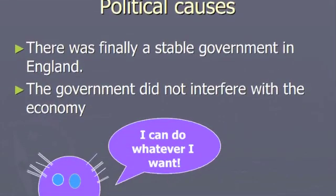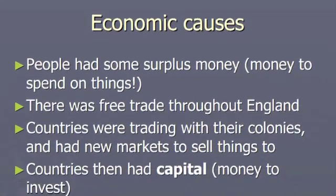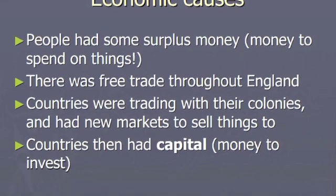Now we have some political causes. Prior to this, England had civil wars and glorious revolutions, but now there was a stable government that pretty much stayed away from what business was doing — government wasn't going to bother the businessman. So the economy began to flourish. People also now had extra money — money they did not need to spend on food or rent — they could spend it on, say, a fancy pair of socks. There was also free trade going on throughout England. Remember, England had lots of colonies, so they could sell their goods to all these markets.